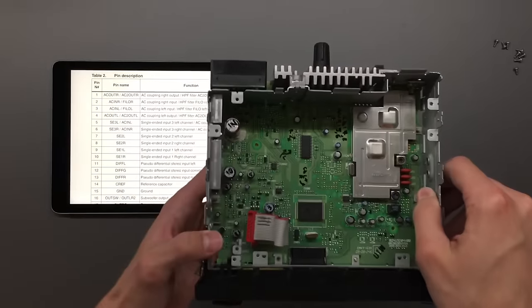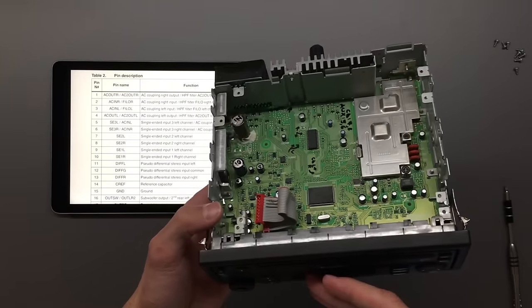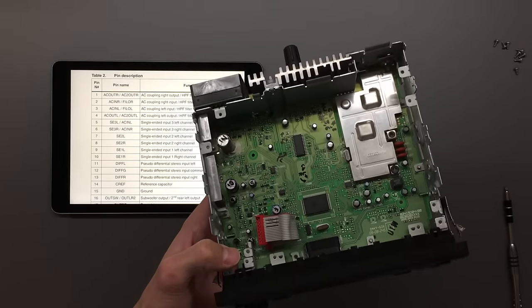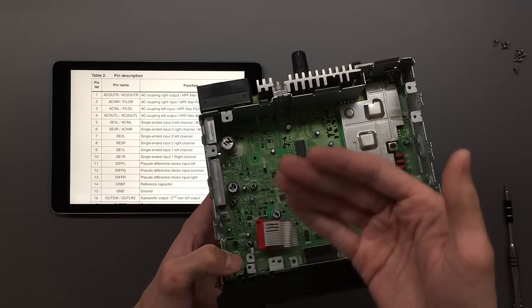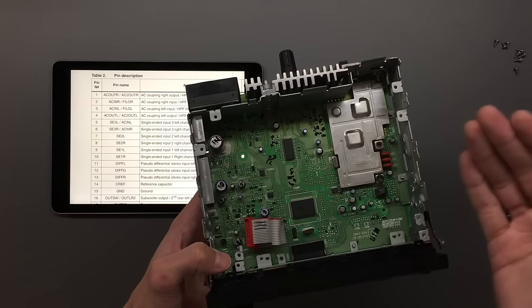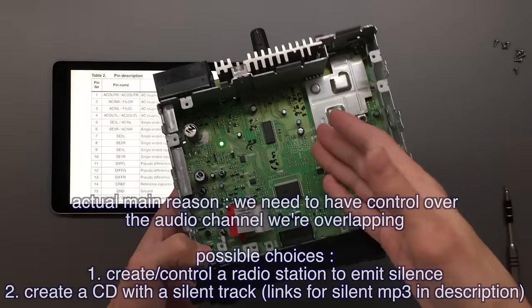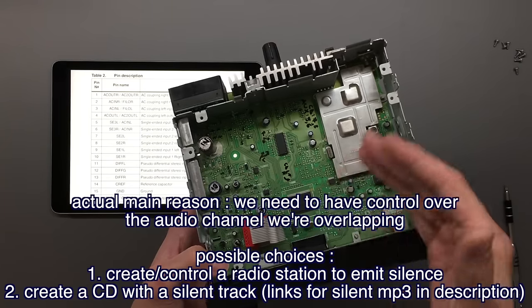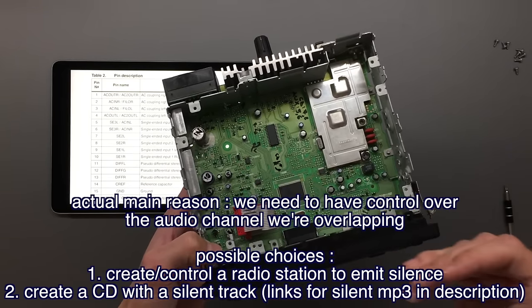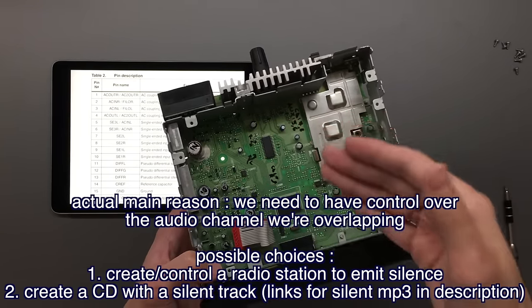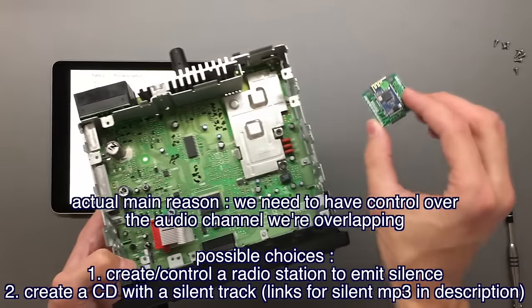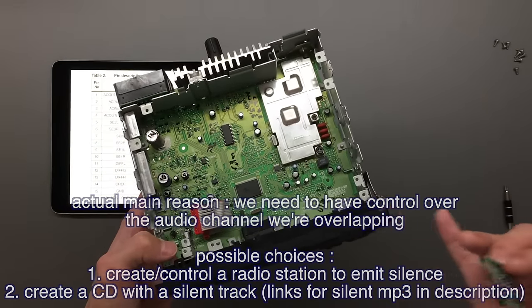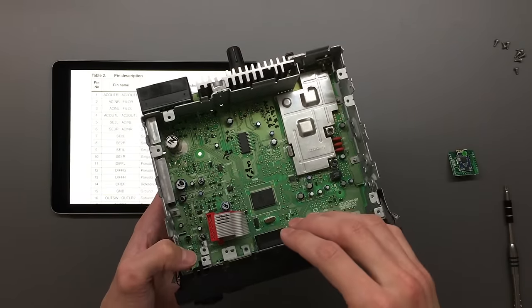After that, you want to identify which one of the inputs is the CD input. I do suggest overriding the CD input because you still want to have the capability of using the radio. And also, this should allow both of them to work, so when you're not injecting the audio from the Bluetooth, the CD should work as normal, and the radio is completely separate.